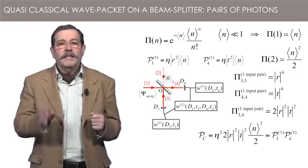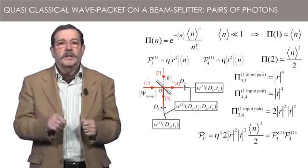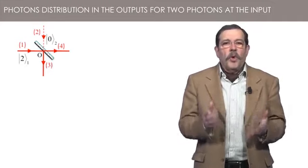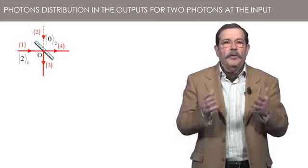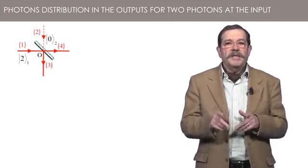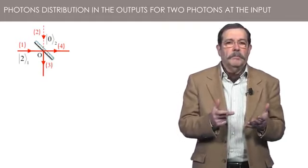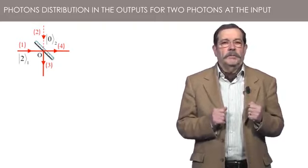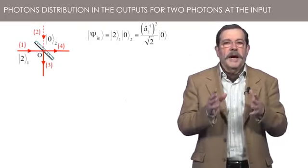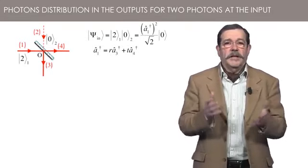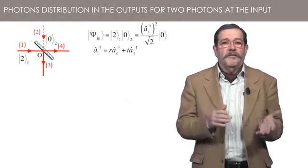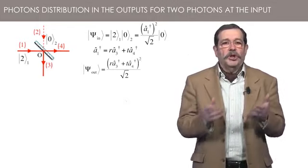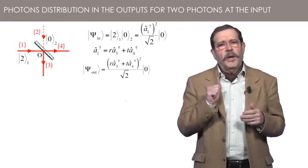I show you that calculation on the next slide. I already told you that an efficient way to calculate the radiation state in the output channels of a beam splitter is to express the input state with the creation operator applied to the vacuum. Transforming the creation operator then allows you to obtain the state in the output channel. Let us do it in the case of a two-photons state at the input. We then replace the creation operator in channel 1 by its expression as a function of creation operators in channels 3 and 4. And we obtain an expression of the output state as a function of the vacuum.